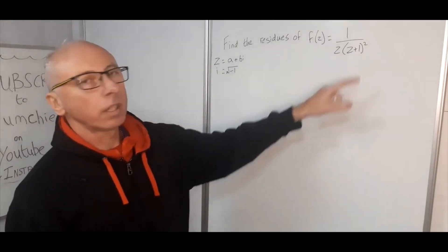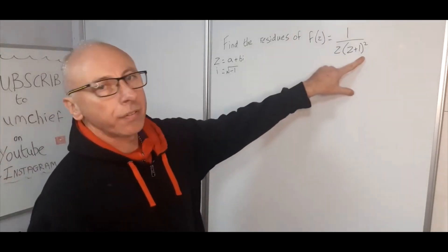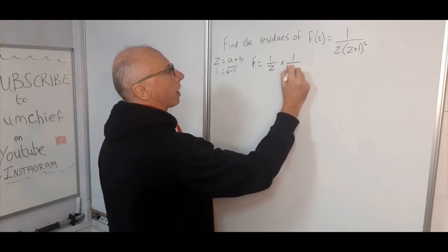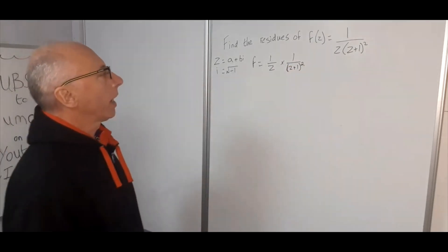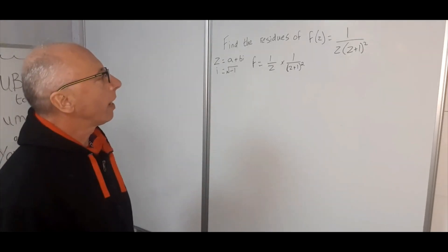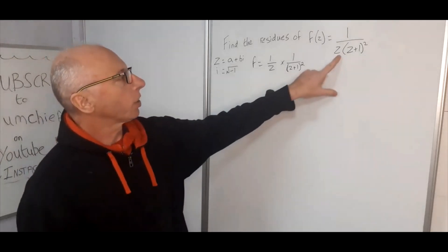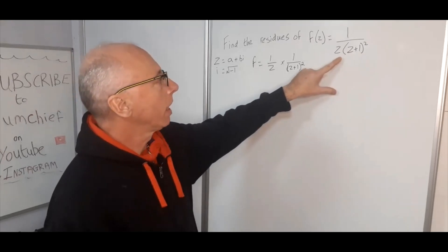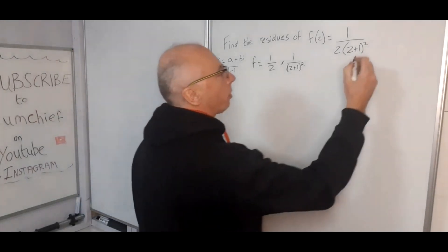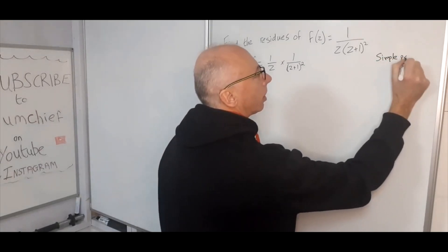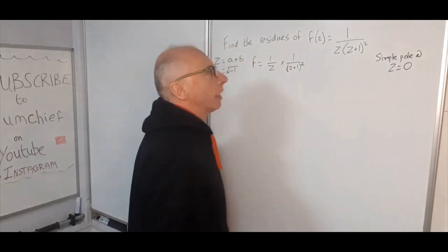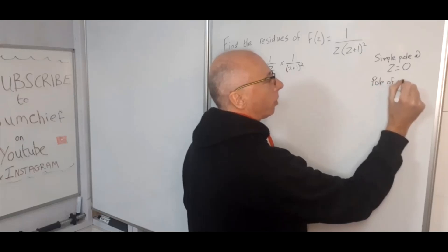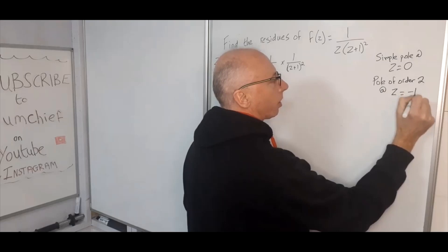To find the residues of f, we rewrite it as f = (1/z) times (1/(z+1))². We need to find the poles first. Looking at this function, z = 0 makes it undefined, and also z = -1. So we have a simple pole at z = 0, and a pole of order 2 at z = -1, because (z+1) is raised to the power of 2.